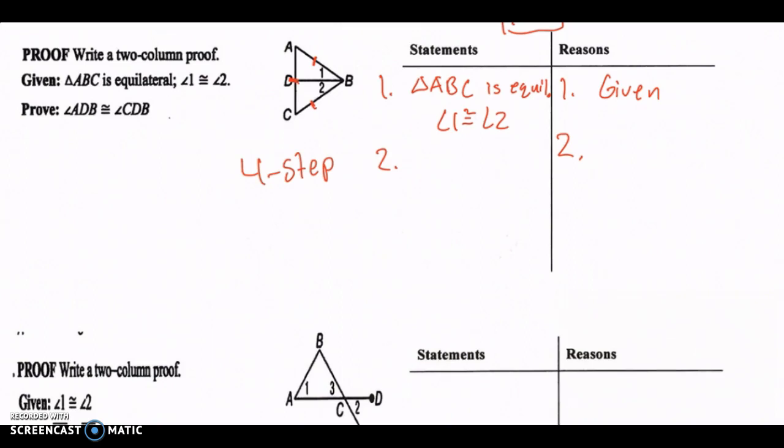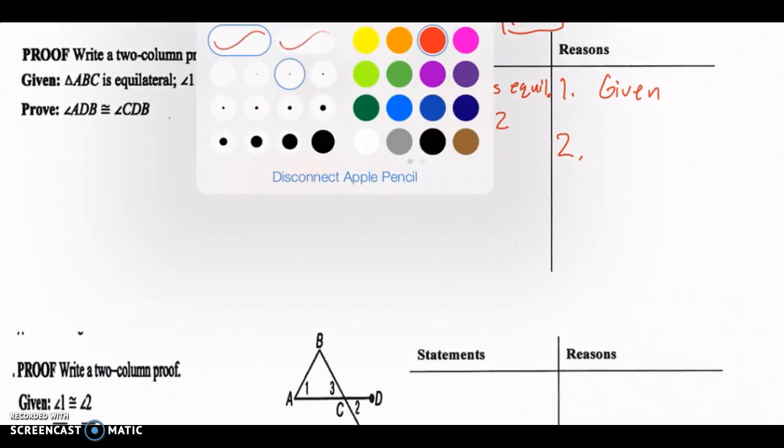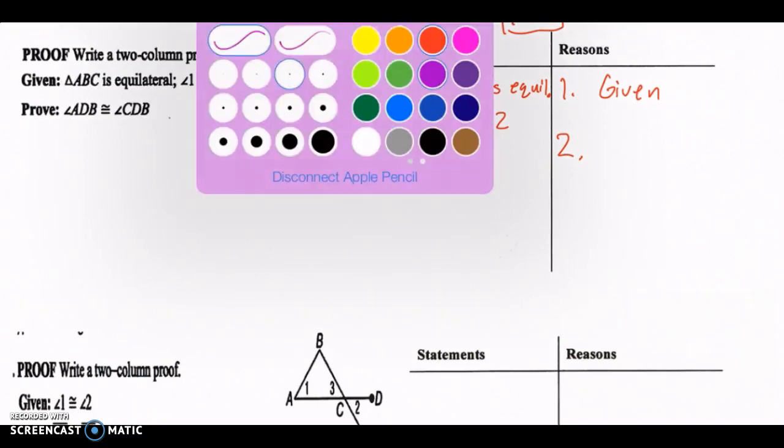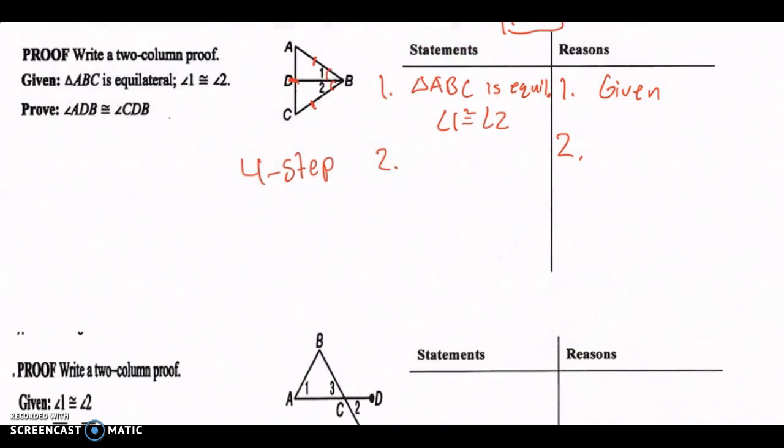So we know that equilateral and angle 1 is congruent to angle 2. And so what else do you know about equilateral triangles? Let's first state everything that we see right here. AB is congruent to CB. And what else? Angle A is going to be congruent to angle C. And this is because definition of an equilateral triangle.